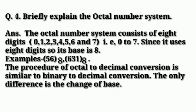Now the fourth question is briefly explain the octal number system. Answer is the octal number system consists of 8 digits 0, 1, 2, 3, 4, 5, 6, 7 that is 0 to 7. Since it uses 8 digits so its base is 8. Examples 56 base 8, 631 base 8. The process of octal to decimal conversion is similar to binary to decimal conversion. The only difference is the change of base.